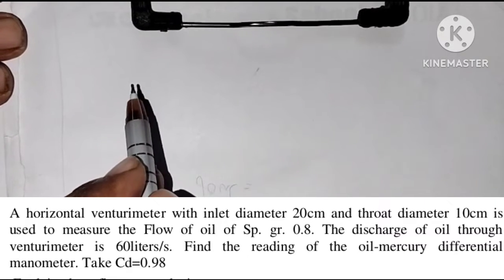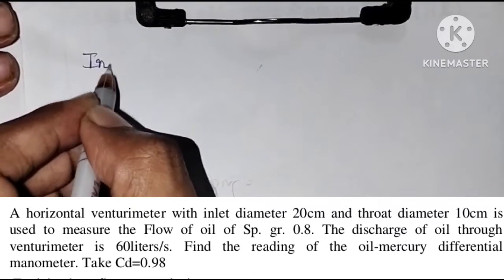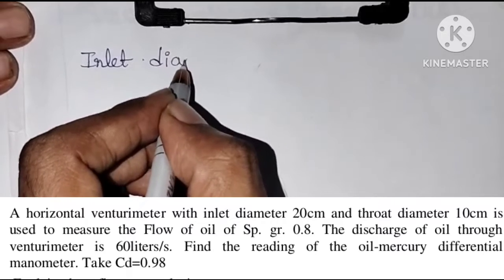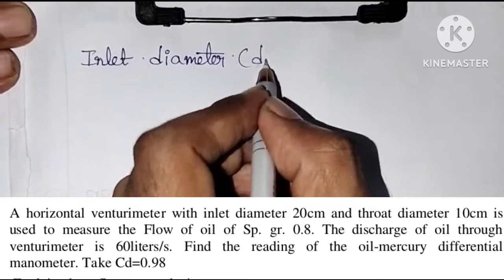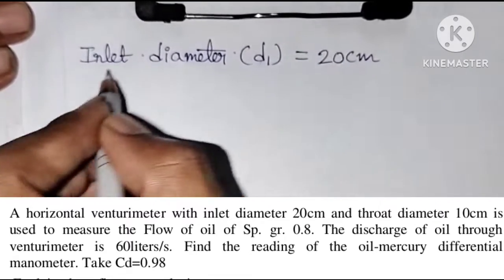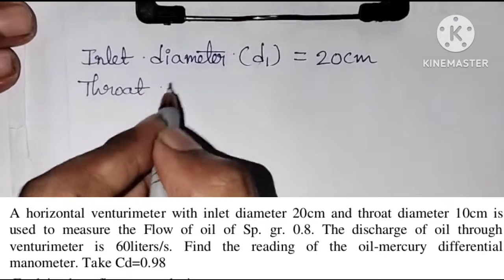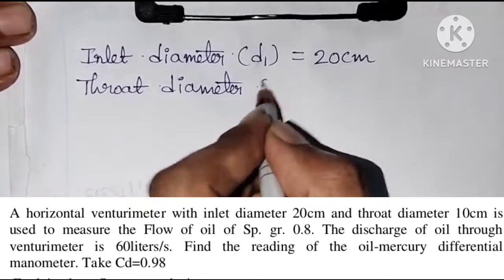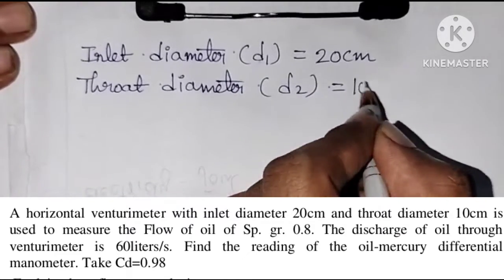So for a horizontal venturimeter, inlet diameter D1 is equal to 20 cm. And also you are given throat diameter D2 is equal to 10 cm.